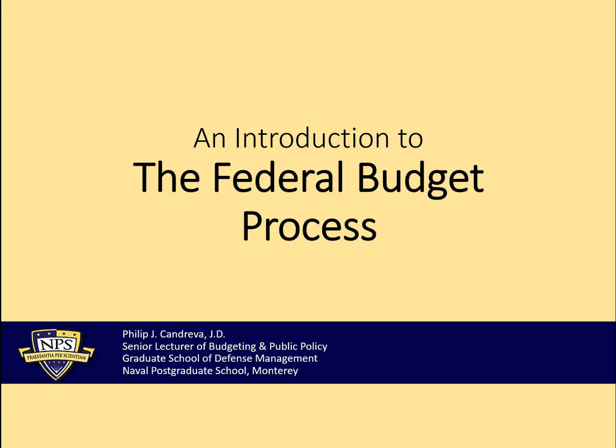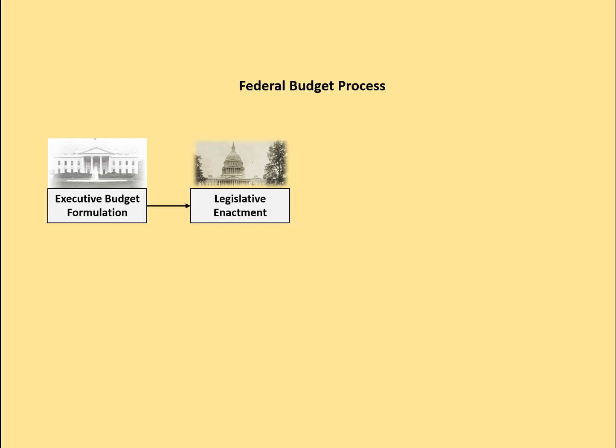When we think about budgeting at the federal level, it's basically a four-step process. The first step is that executive branch agencies formulate their budget requests. Those would then be passed to Congress, the legislature, for enactment — authorization of programs and appropriation of funding. Once the executive branch gets their funding, they go ahead and execute that budget.